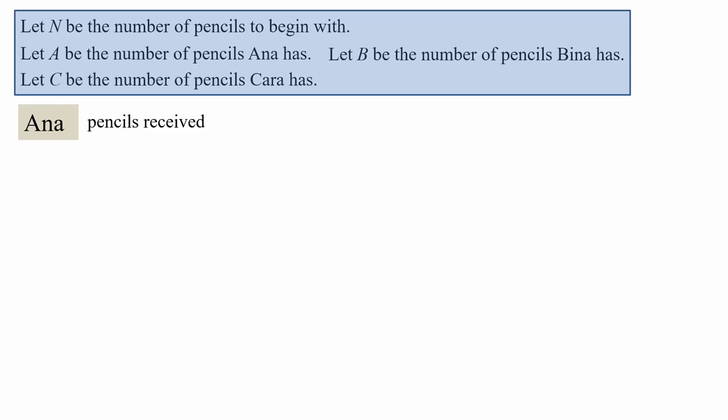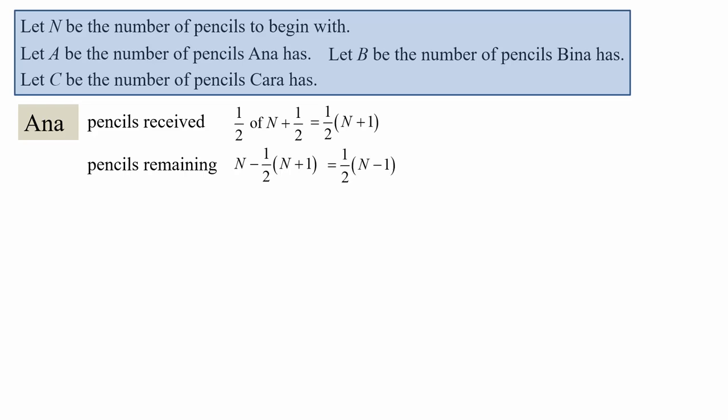Let's look at Anna first. How many pencils does she receive? If N is the number of pencils to start with, she receives half of N plus another half. And we can write that in a different way: half of bracket N plus one. How many pencils are remaining? We started with N pencils. The remaining pencils will be N minus the amount Anna has received, which is a half N plus one. So the difference N minus a half of N plus one simplifies to a half bracket N minus one.